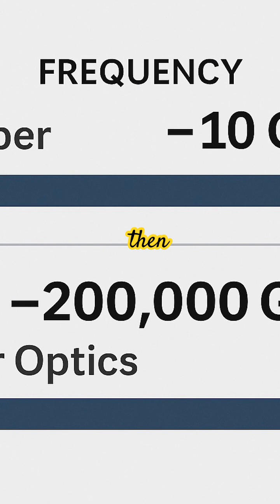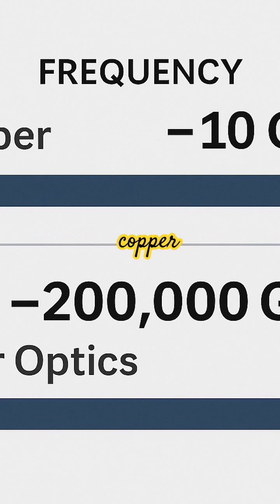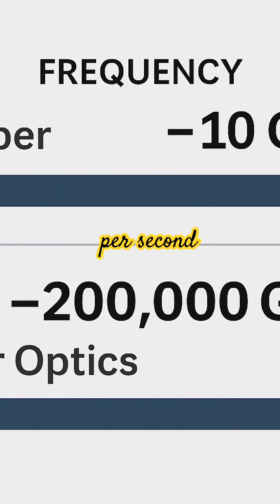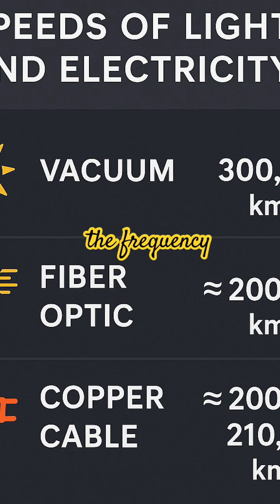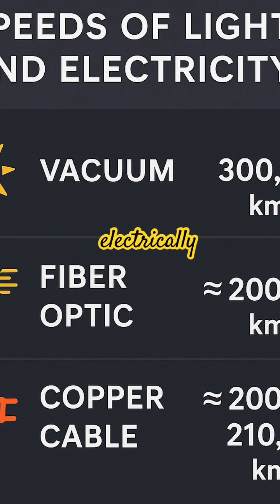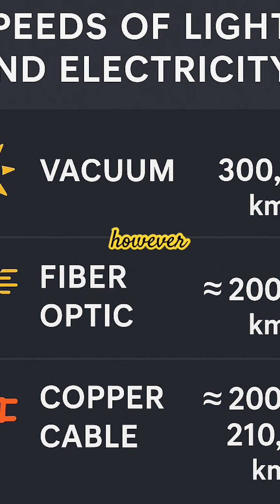The difference in speed between fiber and copper is that copper can do 10 gigabits per second, whereas fiber optic can reach 200,000 gigabits per second. That has to do with frequency, not speed — electrically, copper and fiber optic travel at the same speeds.